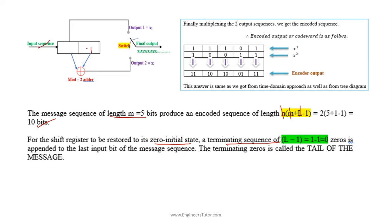After processing the input sequence, if any remaining input bits are present, we append zeros. The number of zeros appended equals the constraint length minus 1. This terminating sequence of zeros is called the tail of the message.